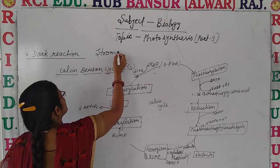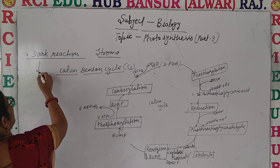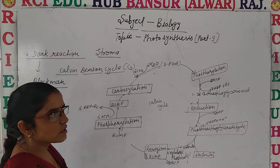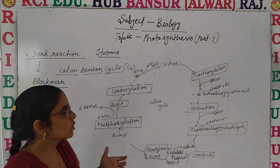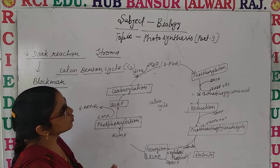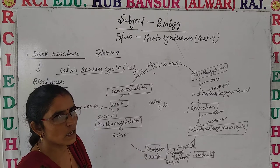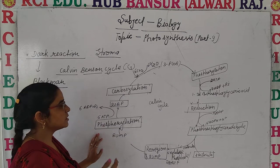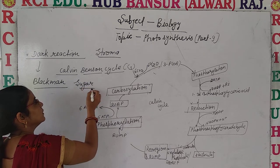The dark reaction takes place in the stroma region and was given by Blackman. The other name for this process is carbon reduction, also called the Calvin and Benson cycle. The power generated during the light reaction is utilized in the process of carbon fixation and reduction of carbon dioxide, meaning sugar formation will take place.